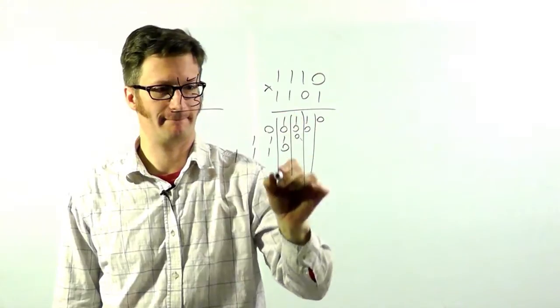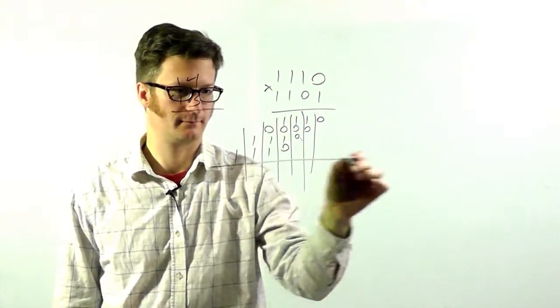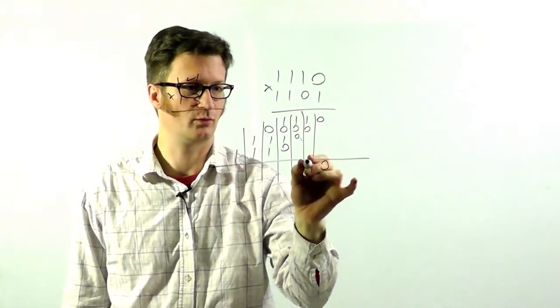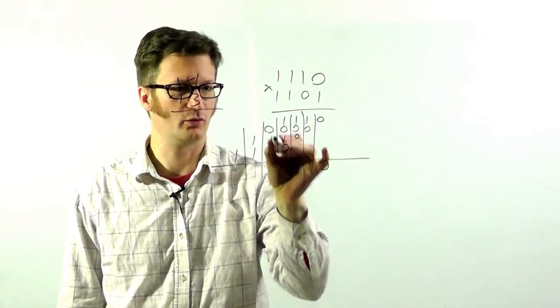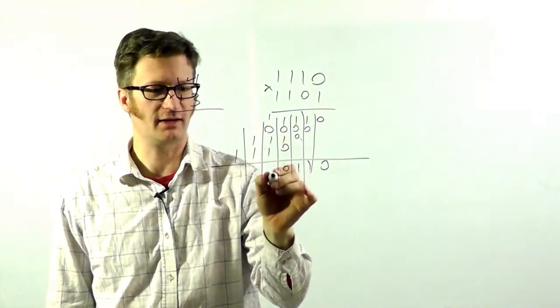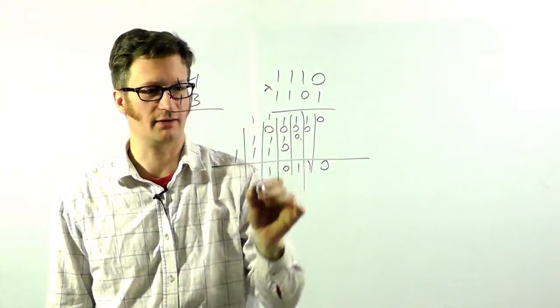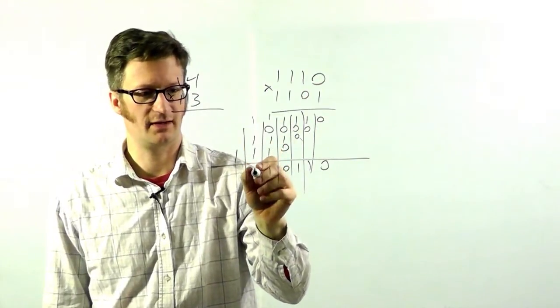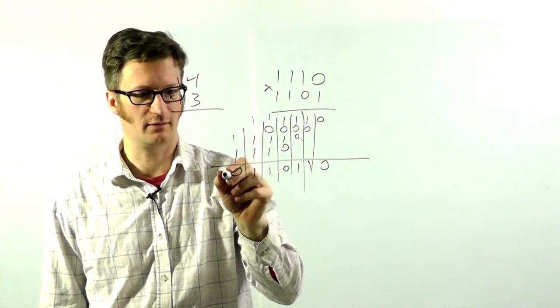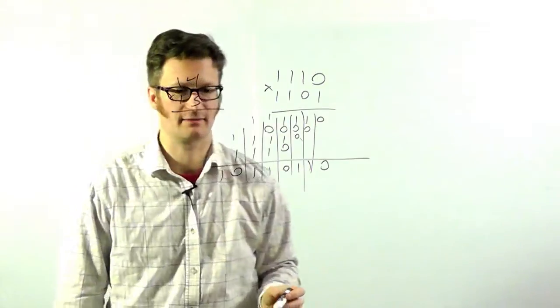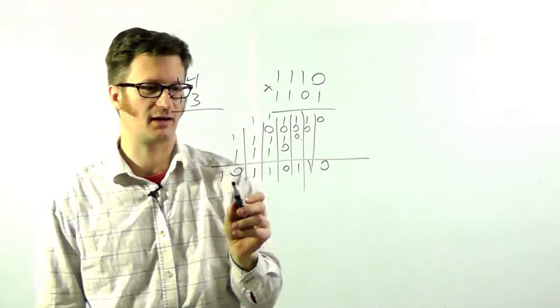Alright, just add them up. 0, 1, 1, 2. Now we have 3. So 3 is 1, 1. Carry it. We've got a 3 here again. 1, 1, 0, 1. Like that. So this is the answer of 14 times 13.